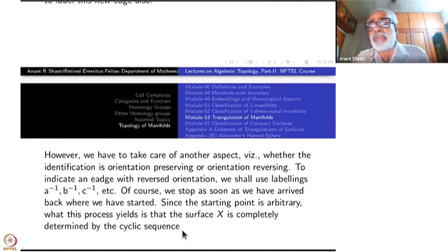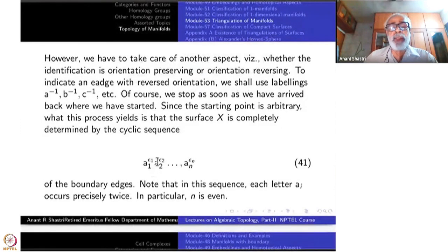So cyclic sequence which looks like A1 epsilon 1, A2 epsilon 2, where epsilon's are nothing but plus minus 1. But I will write A raised to 1, I will just write A1. When it's inverse, I will write A1 inverse. So note that in this sequence, each letter A1 occurs precisely twice. In particular, this N is even.